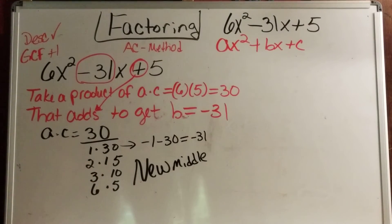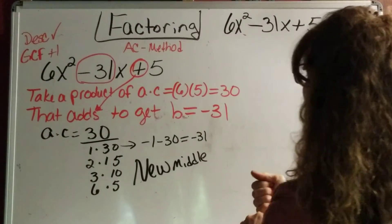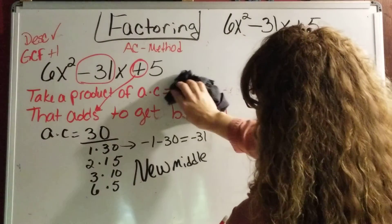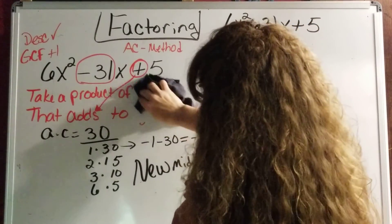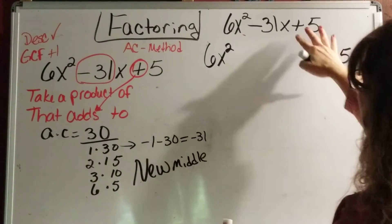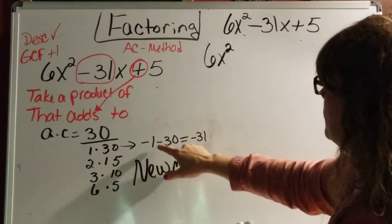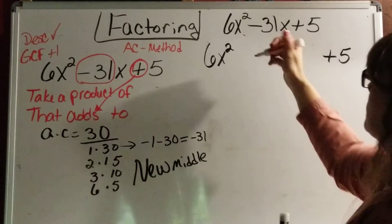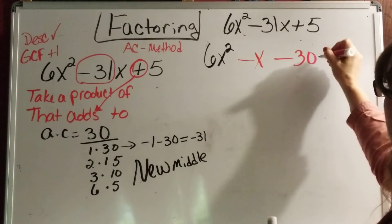So if we got a new middle, let's rewrite this. We're going to keep our first term and bring down the last term. We are replacing the middle term with negative 1 minus 30. But remember, there's an x here. So we have to say negative 1 times x. So it's negative x. Negative 30 times x is negative 30x.